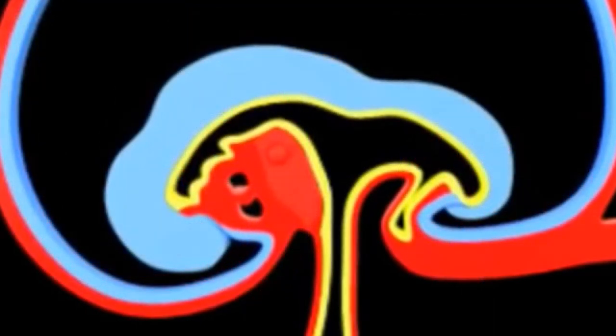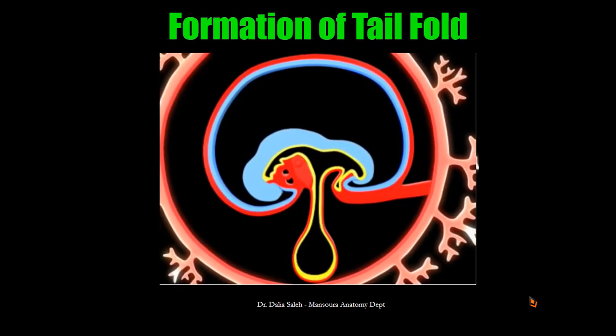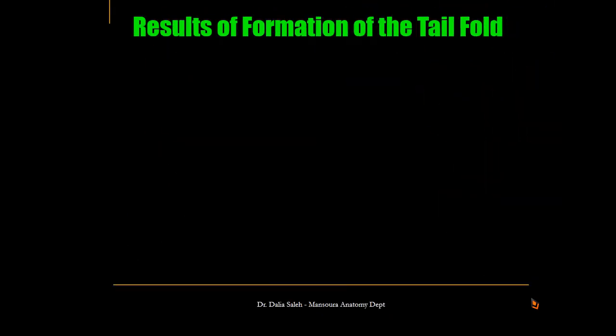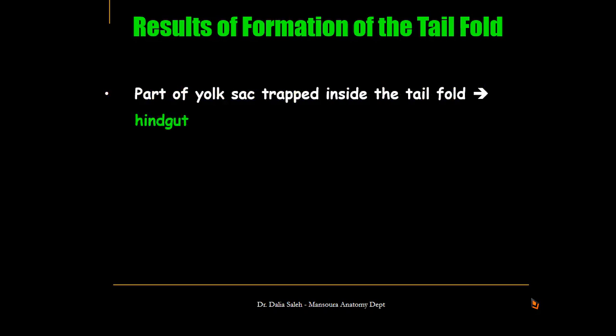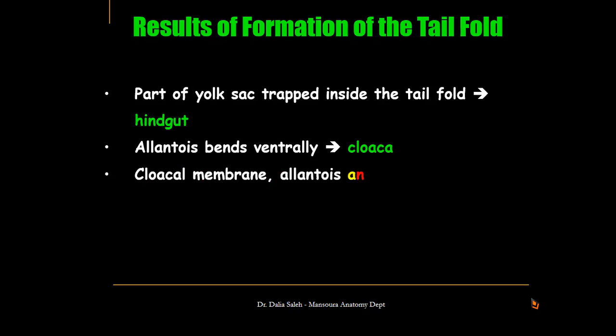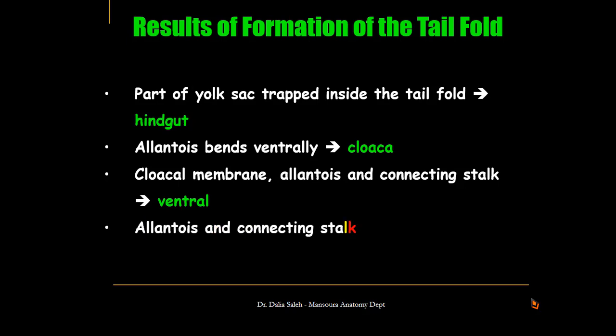With further growth, the allantois and the connecting stalk move more and more to the ventral side of the embryo, and part of the yolk sac — the endoderm — would be trapped inside the embryo. So, what are the results of formation of the tail fold? First, part of the yolk sac will be trapped inside the tail fold and form the hindgut. The allantois will bend ventrally and drag a sac behind it, which we call the cloaca. The cloacal membrane, the allantois, and the connecting stalk will move ventrally, and the allantois and connecting stalk will later form the umbilical cord.